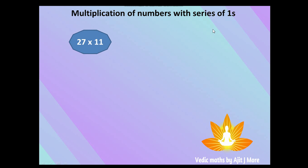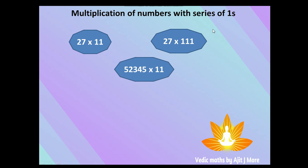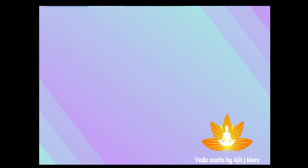Let's see multiplication of numbers with series of ones. A few examples: 27×11, 52×11, or 52,345×11. Do you agree these all fit in this category? Now let's see how we can do this using the Vedic trick.